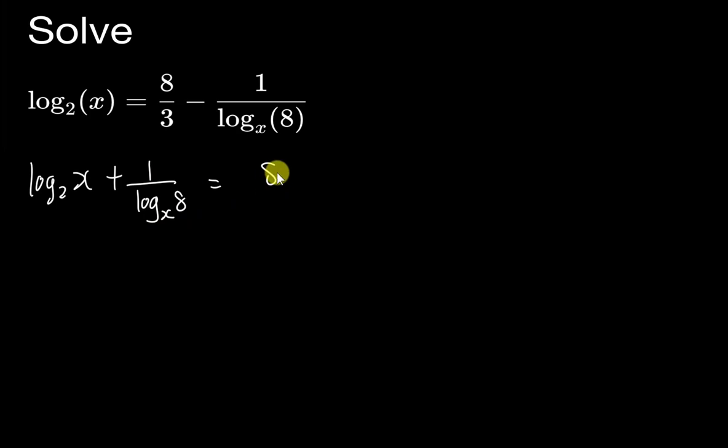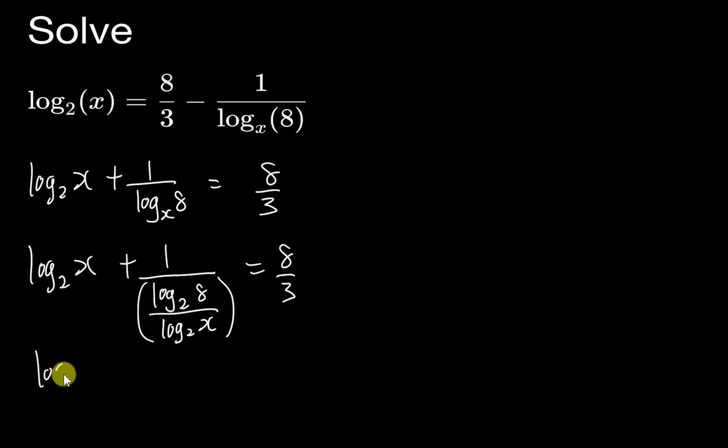Let's say this is log₂(x) and then I move to the other side to become plus. So I have 1 over log_x(8) equals to 8 over 3. Right now I change the base into base 2, so this is log₂(8) over log₂(x), which equals 8 over 3. I can save some steps here because 1 divided by a fraction basically means flip over.